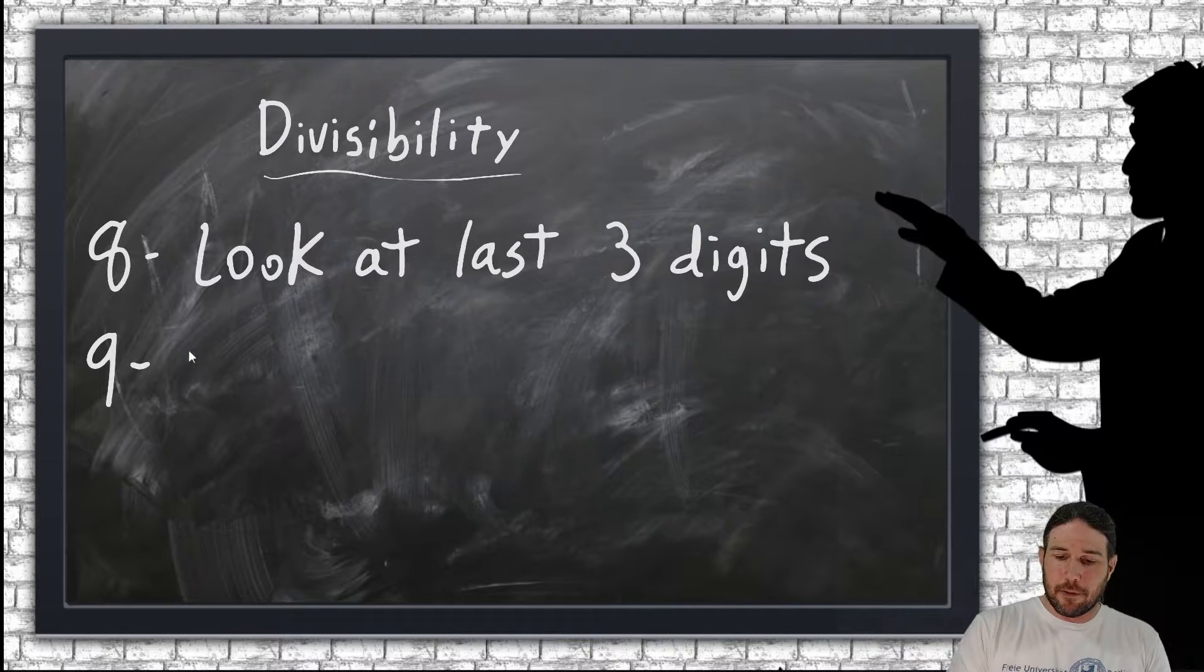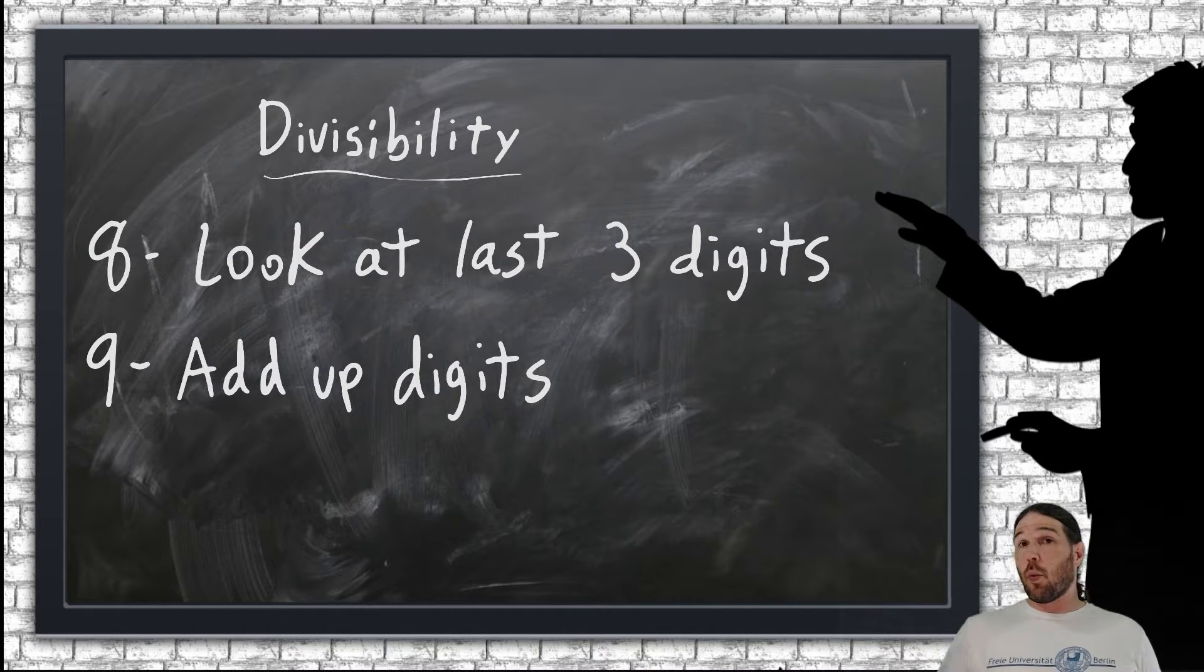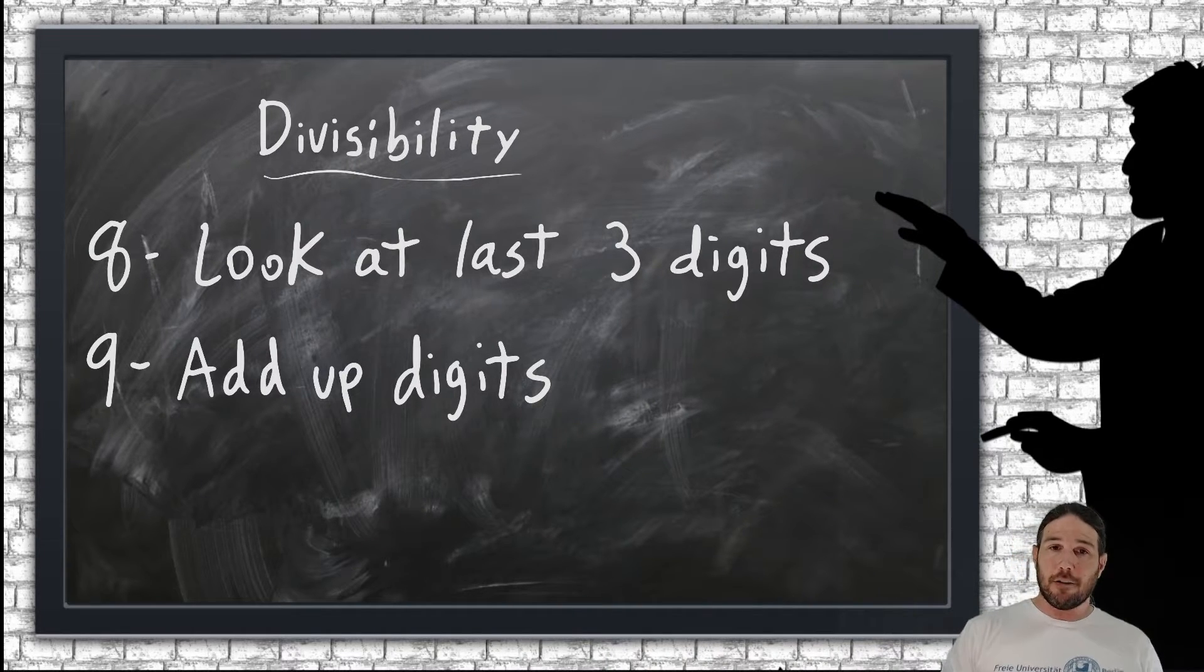9 is exactly the same as 3. You add up the digits, and you see whether or not the result is a multiple of 9. So, for example, if I have 207,